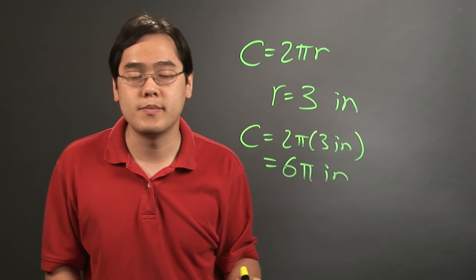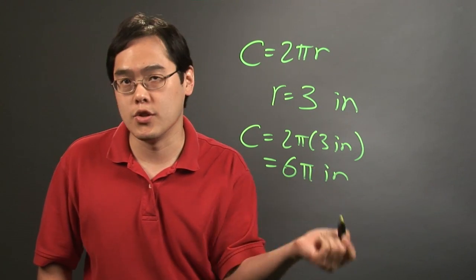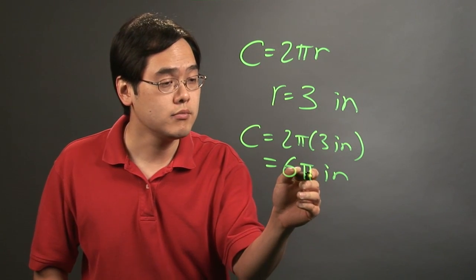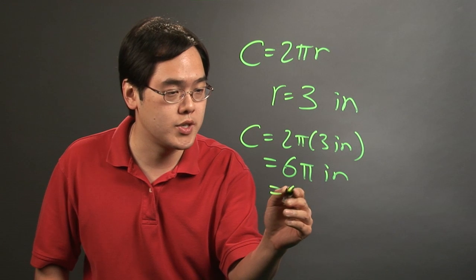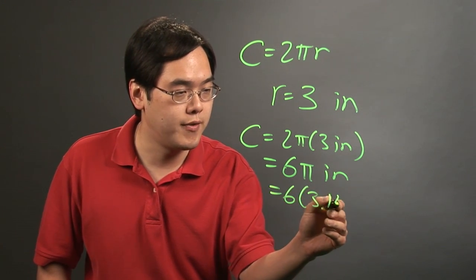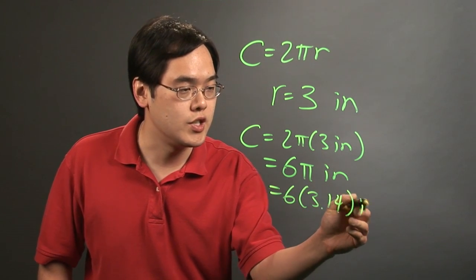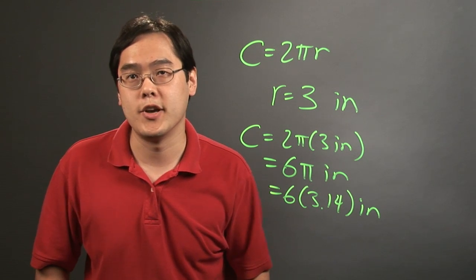Now to find the decimal approximation, you can either use a calculator to find the exact value of π, or you can approximate it by saying π is 3.14, so 6 times 3.14 inches, and that'll give you the approximate measurement.